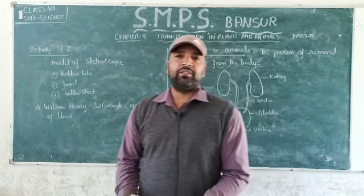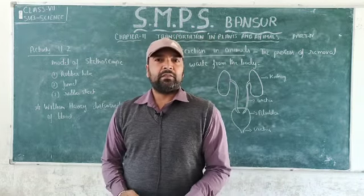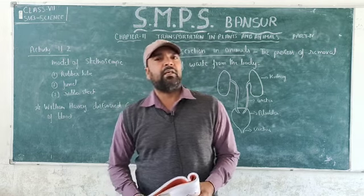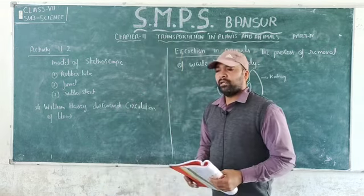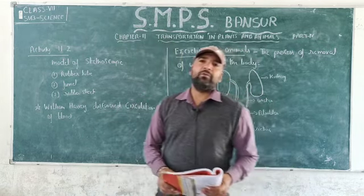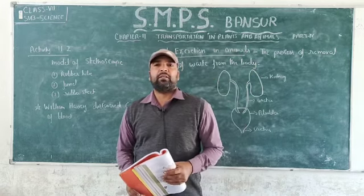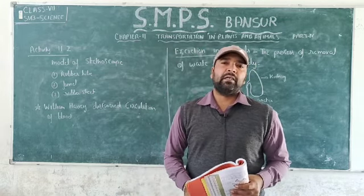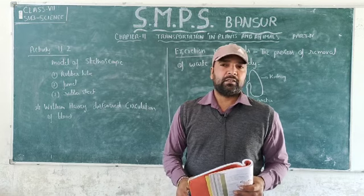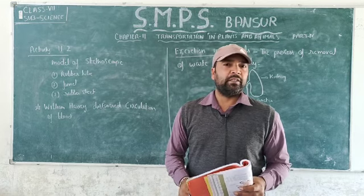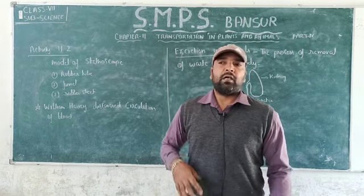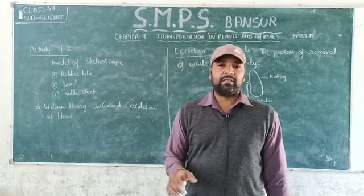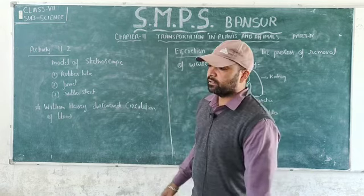Good morning, welcome back to online study. 7th class science, chapter number 11: Transportation in Animals and Plants. In the previous video we have seen the working of the heart, the parts of the body involved in the circulatory system, what is the function of the heart, its location, and what are the blood vessels — arteries, veins, and capillaries.